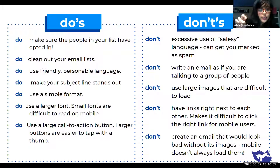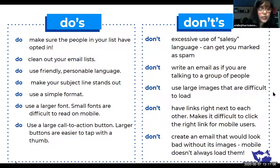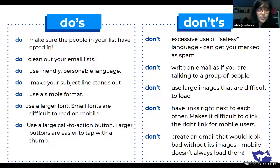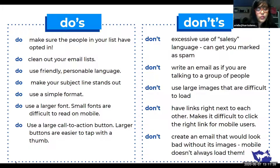Don't use excessive salesy language — if you use language like 'good deals' or 'good discounts,' it might get marked as spam and people will dismiss your emails. Don't write an email as if you're talking to a group of people — while you are sending a mass email, acting as if you're not talking to individuals will just turn people off. Don't use large images that are difficult to load. A lot of people check their emails using their phones rather than desktop, so large images are definitely not good for mobile phones. Don't have links right next to each other — this just makes it hard for mobile users.